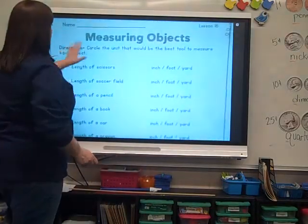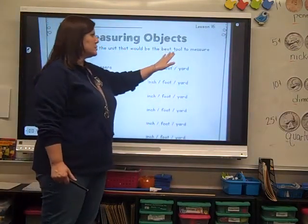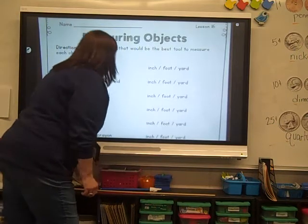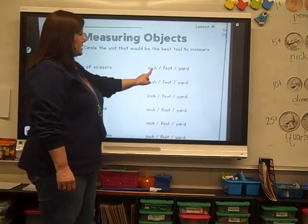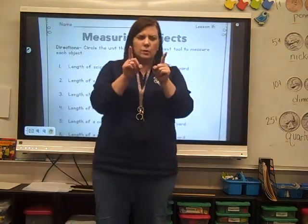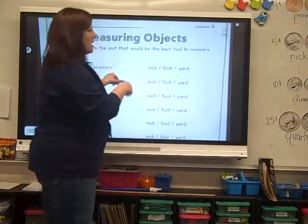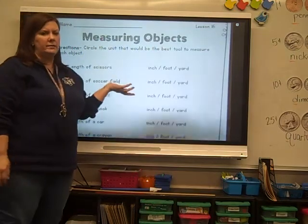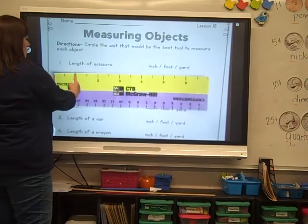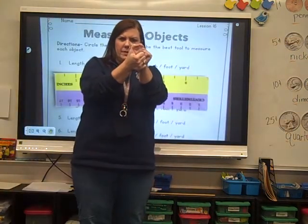This tells us measuring objects. It says circle the unit that would be the best tool to measure each object. They give us a choice of an inch, a foot, or a yard. Yesterday you used your little ruler to measure inches. Right here is one inch — one inch is about the size of your thumb.